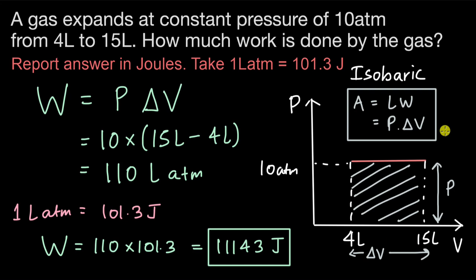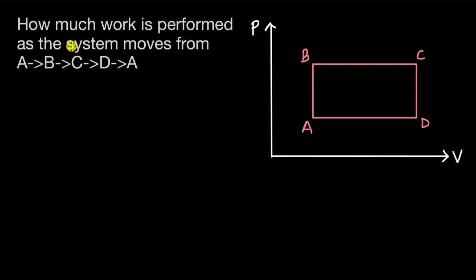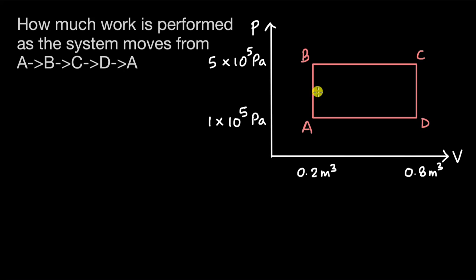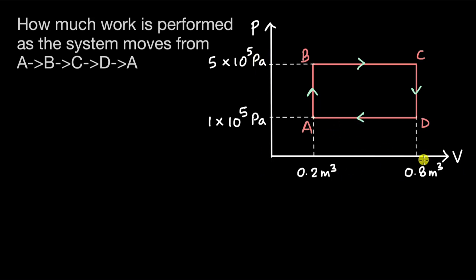Let's look at one more question now. How much work is performed as the system moves from A to B, then B to C, then C to D, and then back to A? We can see all the pressure and volume values at points A, B, C, and D on the diagram.